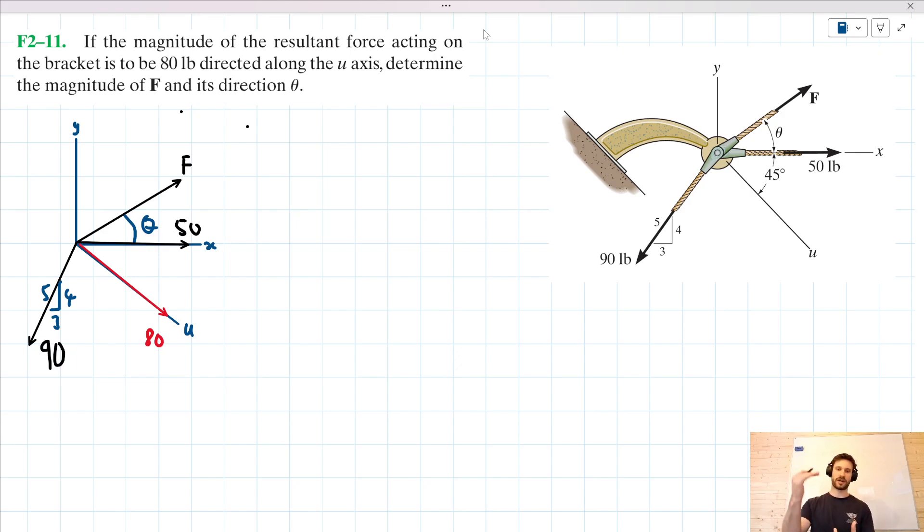If we were to add these forces together, how would we do it? Well, we'd probably break those forces down into their horizontal and vertical components and add them together respectively. So understanding that when I add all together the horizontal components of force F, this 50-pound force and this 90-pound force, I will get the horizontal component of this 80-pound force.